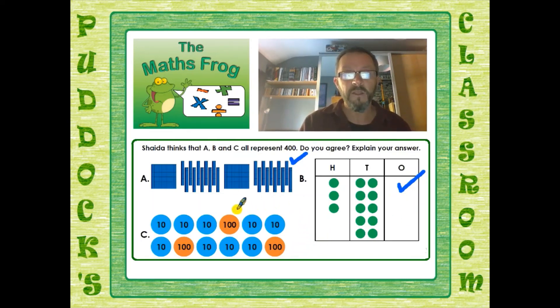So far I'm agreeing with Shida because she said that they all represent 400, but we have to check the third one as well. Again, we can see there's 100, 200, 300. She's got three hundreds there so far. How many tens has she got? 10, 20, 30, 40, 50, 60, 70, 80, 90. Oh, there's only 90 there. So this one has got 390. It isn't 400. So I put my cross there.